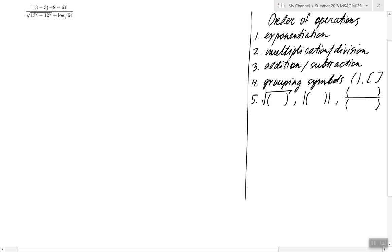When we look at our problem, we see a giant division bar with an absolute value expression on top, and a radical and logarithm on the bottom. So what's inside the absolute value, what's inside the radical and logarithm have to be computed first.